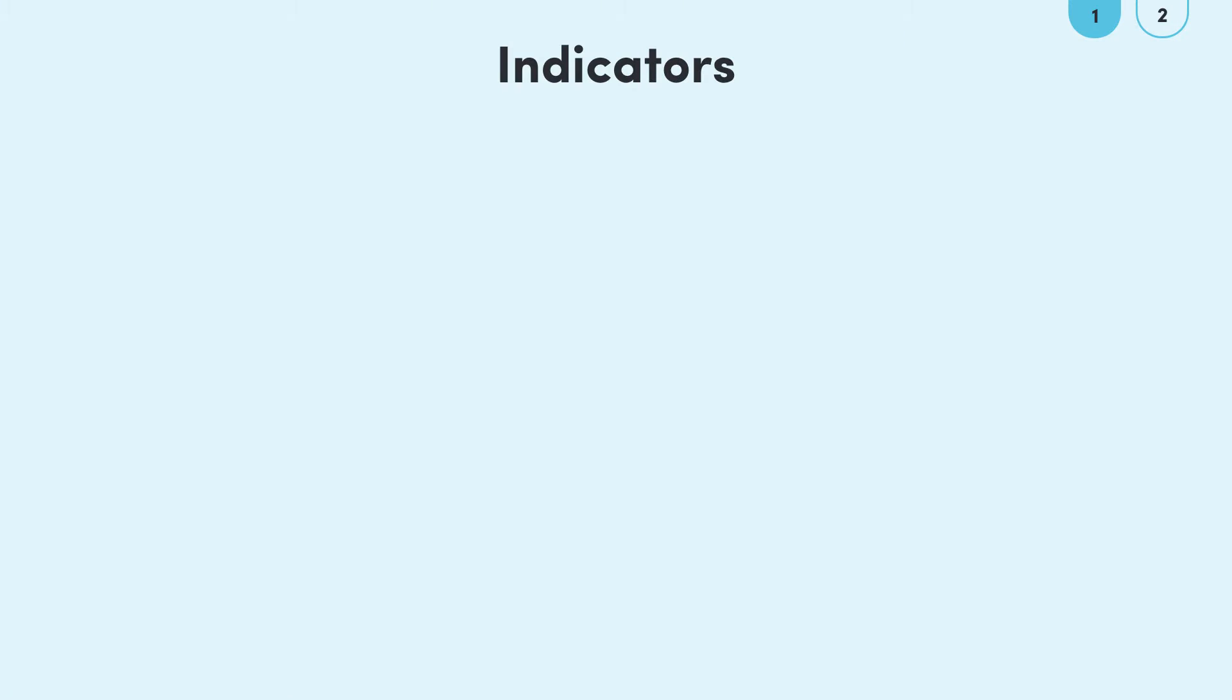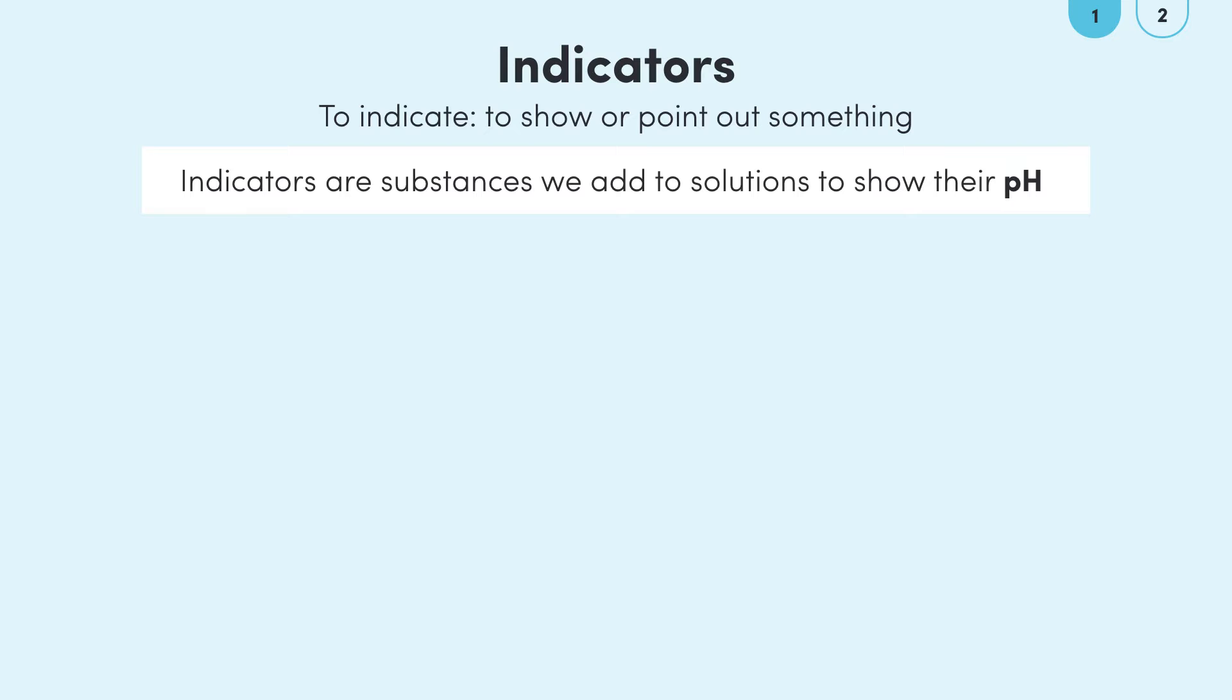Analyzing the word indicator can help us understand what an indicator is. To indicate is to show or point out something. This can help us to remember that indicators are substances that we add to solutions that show or point out their pH.